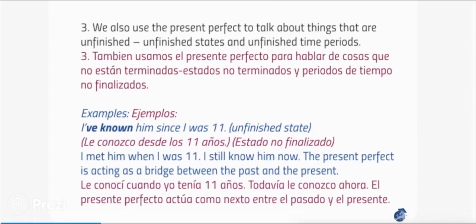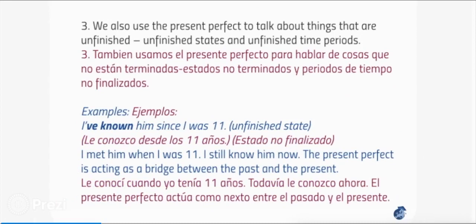Three, we also use the present perfect to talk about things that are unfinished — unfinished states and unfinished time periods. Example: I've known him since I was eleven. Unfinished state: I met him when I was eleven and I still know him now. The present perfect is acting as a bridge between the past and the present.